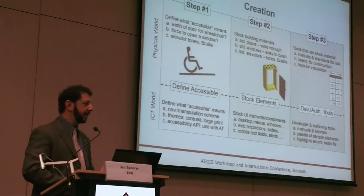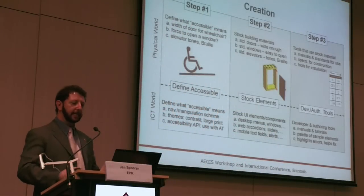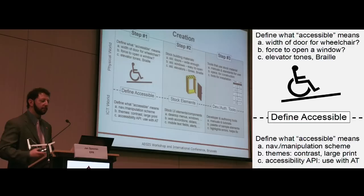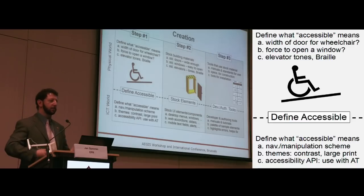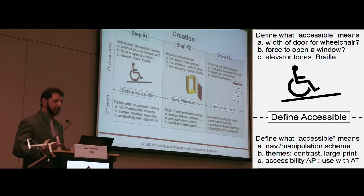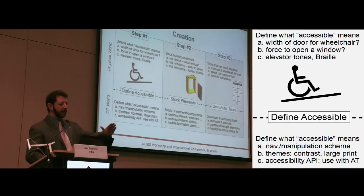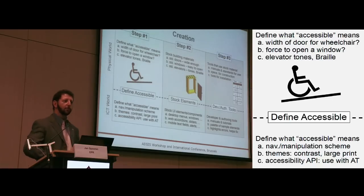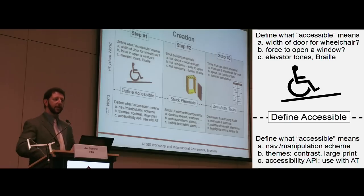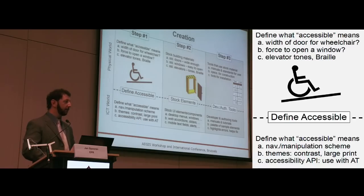We believe that there are six steps to making an accessible world. The first step is to define what accessible means. What is the width of a door that allows a wheelchair to get through? What is the angle of a wheelchair ramp? What are the proper tones to make in an elevator to indicate that the elevator is changing floors, that the elevator has arrived and is heading up or down?